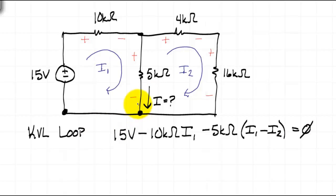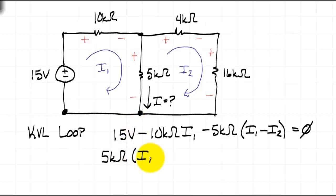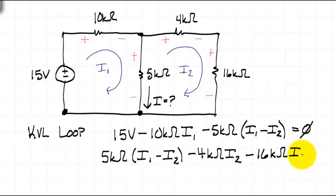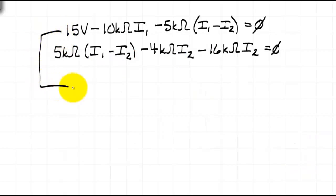On to the second loop. Starting in the lower left-hand corner and going around in the direction of I2, we have a voltage rise across the 5kΩ resistor, giving a term of 5kΩ times the quantity I1 minus I2. The current through the 4kΩ resistor is just I2, and the voltage polarity agrees with I2, so the term is minus 4kΩ times I2. The same holds for the 16kΩ resistor, giving a voltage drop of 16kΩ times I2. The voltages must add to zero.